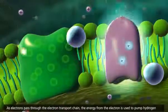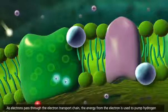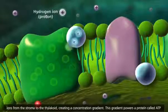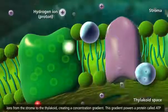As electrons pass through the electron transport chain, the energy from the electron is used to pump hydrogen ions from the stroma to the thylakoid, creating a concentration gradient.